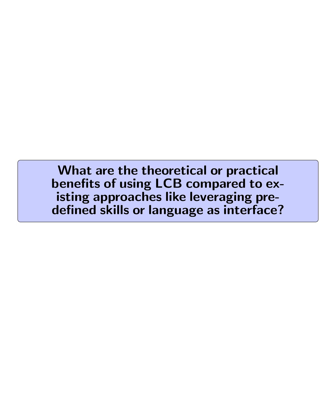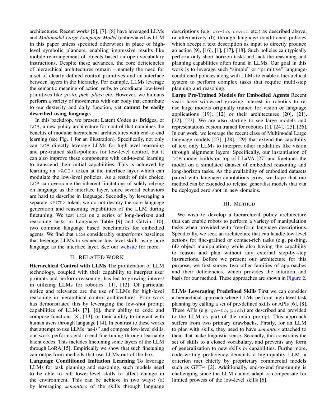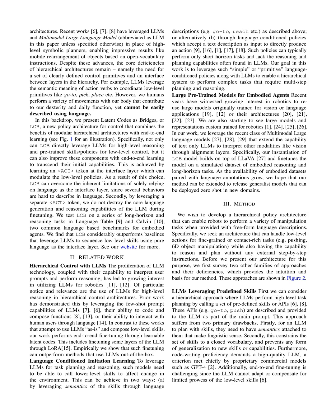The theoretical and practical benefits of using LCB compared to existing approaches like leveraging predefined skills or language as an interface are significant. LCB overcomes the limitations of predefined skills by introducing a learnable <ACT> token that acts as a bridge between the high-level LLMs and low-level language-conditioned policies. This allows for more flexibility and adaptability in task execution, as the <ACT> token can convey abstract goals and nuances to the low-level policy not easily described through language. LCB also preserves the core language generation and reasoning capabilities of the LLM during fine-tuning, ensuring the model does not lose its original capabilities while enhancing low-level control.